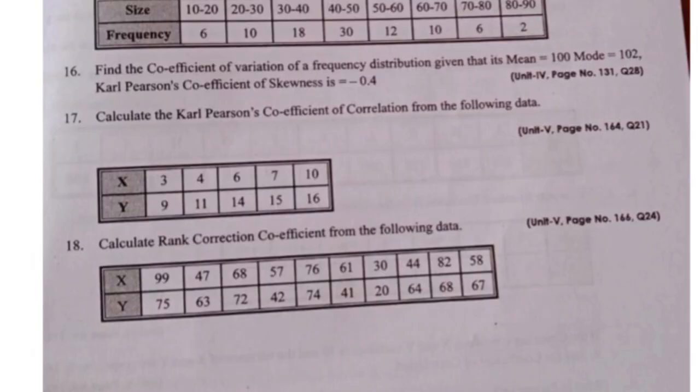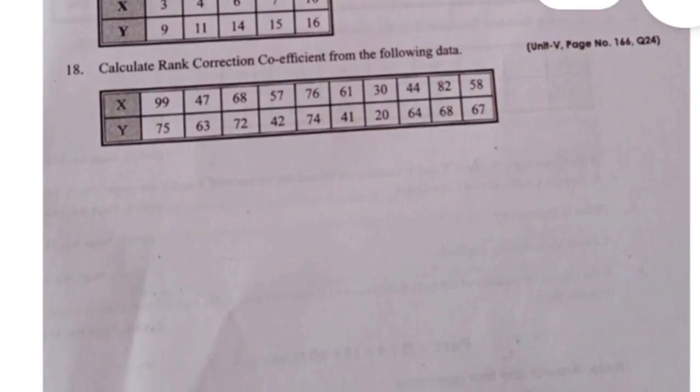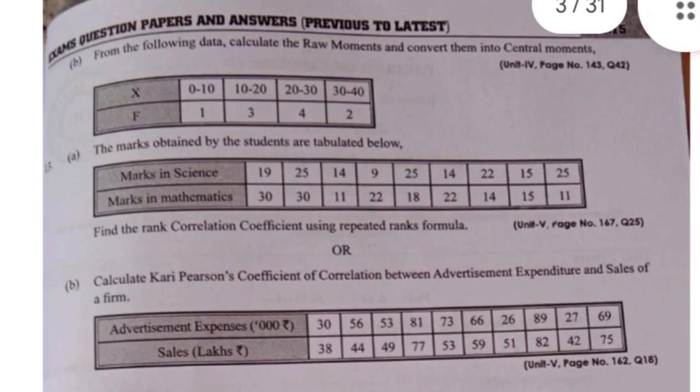And fourth unit is quenness coefficient of skewness, and fifth unit is either rank correlation or Karl Pearson coefficient of correlation. So this type of questions only they will ask in the examination hall, so don't need to get worried about the question paper, right?